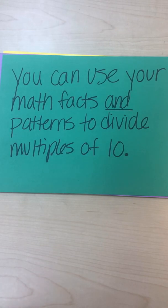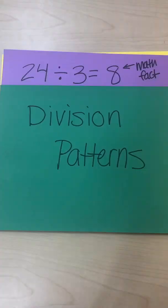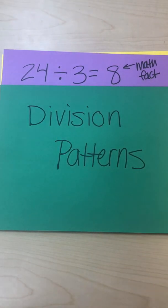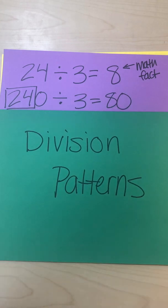That means a ten goes into it. If a ten goes into it that means we can use this pattern, kind of like last chapter when we multiplied. So here we have our math fact: 24 divided by 3 is 8, or 8 times 3 is 24. Now I'm going to make it a step harder and see if we can start using a pattern to divide.